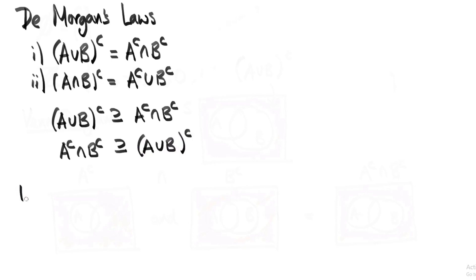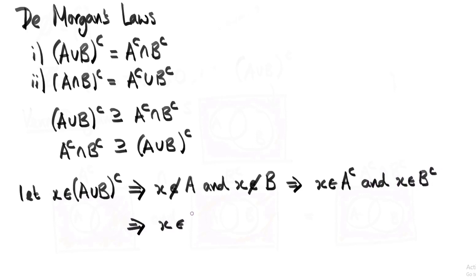Let's pick an arbitrary element in A union B complement, denoted by x. Since x is in A union B complement, that means it's neither in A nor in B. So x is not a member of A and x is not a member of B. Therefore, x is a member of A complement and x is a member of B complement. So x is a member of A complement intersection B complement.